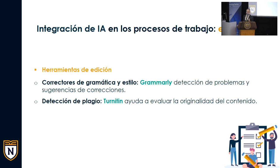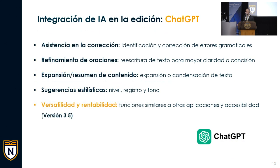En los procesos de edición, estamos utilizando herramientas que corrigen la gramática y el estilo como Grammarly y Turnitin. Otro de nuestros departamentos nos ayuda con Turnitin para detectar posibles instancias de plagio y asegurar la originalidad de los materiales que se utilizan en nuestros cursos. Finalmente, dimos con la idea de integrar ChatGPT, no solo por su popularidad sino por su accesibilidad. ChatGPT tiene la ventaja de que tiene una versión gratuita, que es la que podríamos poner a disposición de los recursos y que para los efectos que estamos utilizando ahora es muy funcional y accesible.